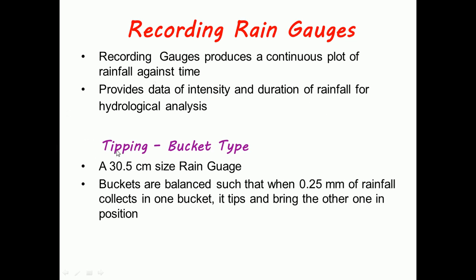First comes the tipping bucket type. It is a 30.5 centimeter size rain gauge. Buckets are balanced.